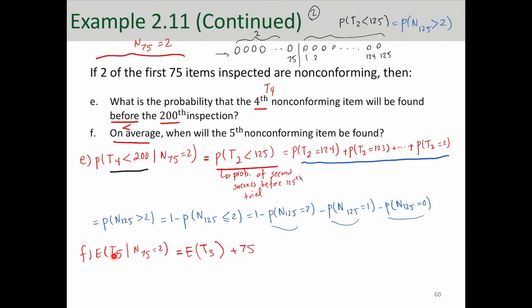Because T5 is the number of trials until the fifth non-conforming, and that number of trials has got to be more than 75. 75 only got us two non-conforming, so we add 75 to expected value of T3.